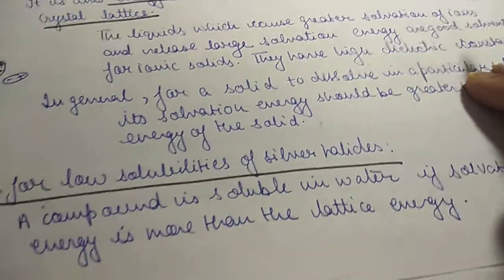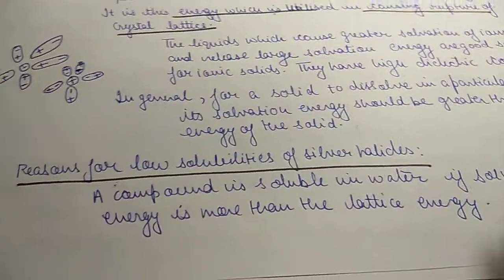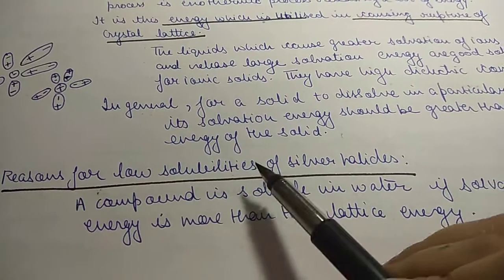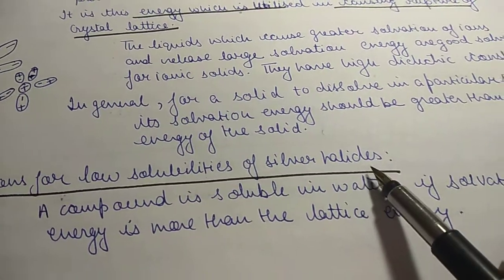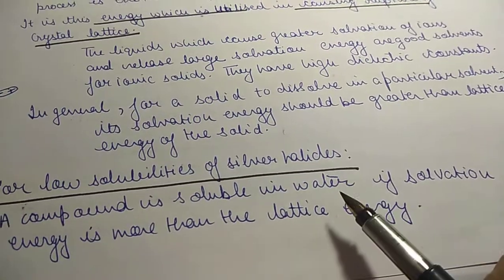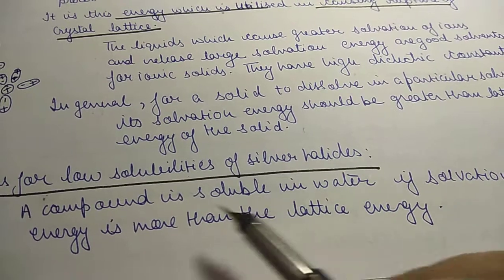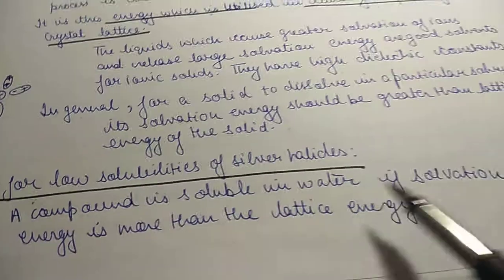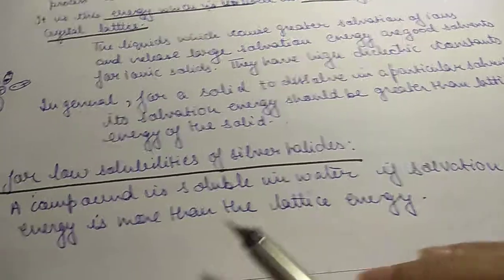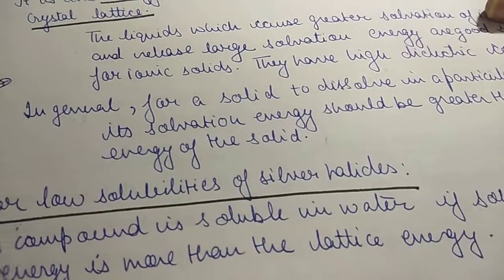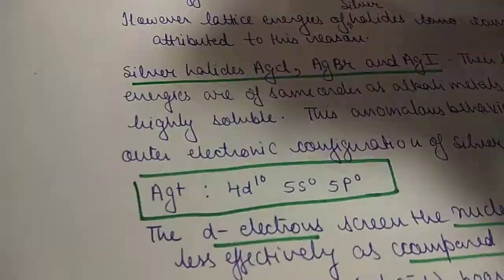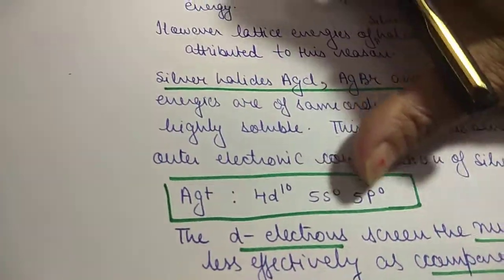Now we have a specific case: reasons for low solubilities of silver halides. A compound is soluble in water if solvation energy is more than the lattice energy. Silver halides are a special case to examine.